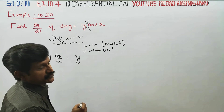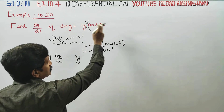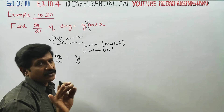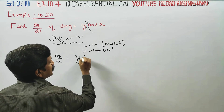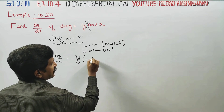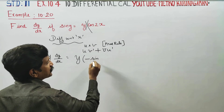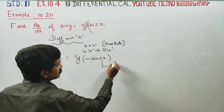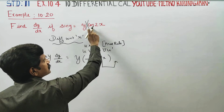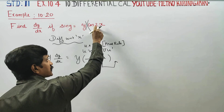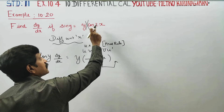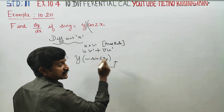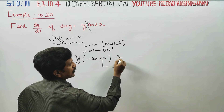cos 2x — differentiate cos 2x. cos x differentiated gives minus sin x. For cos 2x we use the chain rule: differentiate cos 2x with respect to 2x, then multiply by d by dx of 2x, giving minus sin 2x times 2.